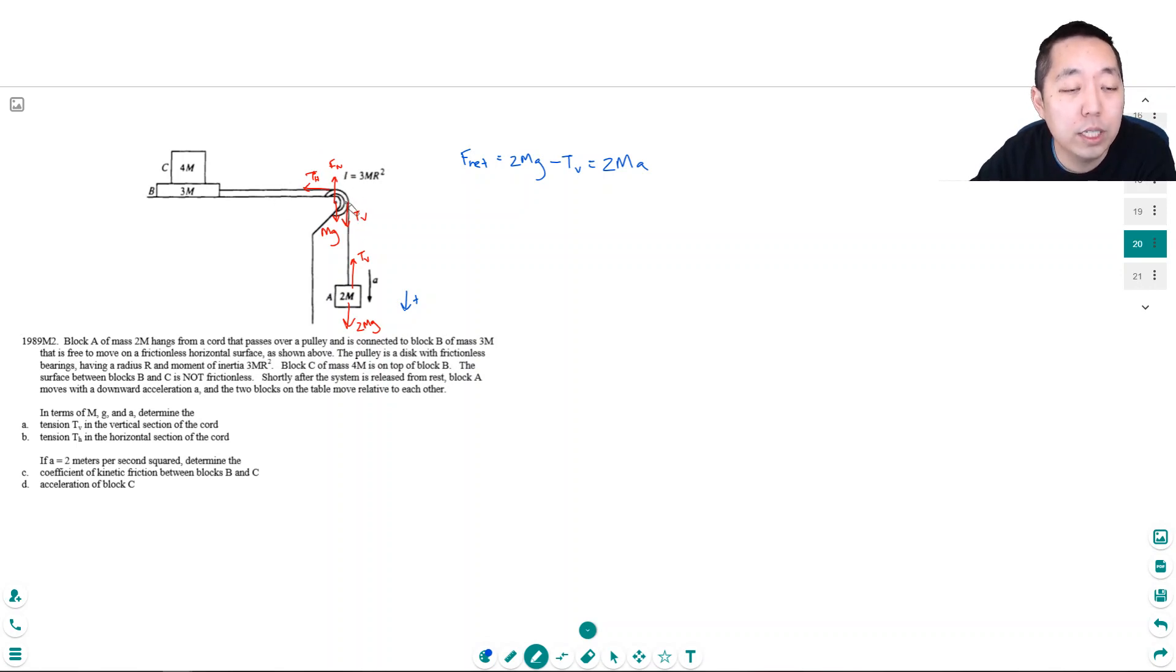The torque, the only thing causing rotation are Tv and Th because the other forces are acting at the point of rotation and that doesn't cause any rotation. That torque is zero. So my net torque is R times F. If I draw my R vectors, they look like this for this torque. So when I do Tv, it's doing a torque.